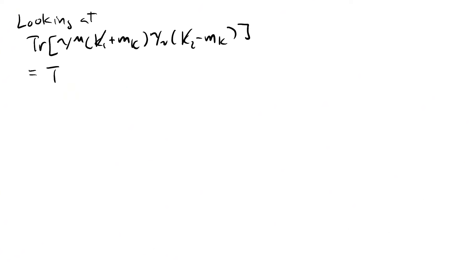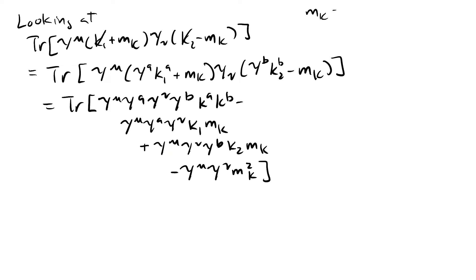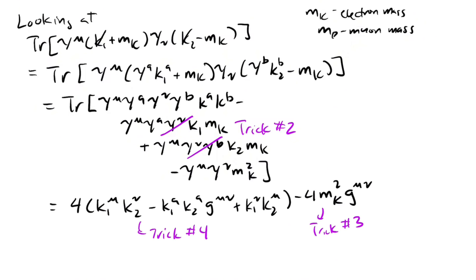Let's focus on the first trace. We can do some algebra to get this. The trace is a linear operator, so the trace of the sum is just the sum of the traces. Trick number two gets rid of the odd terms, and trick number three and four simplify these traces, where we have to use the fact that the metric tensor contracts vectors.